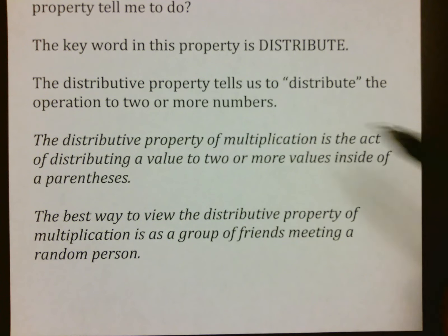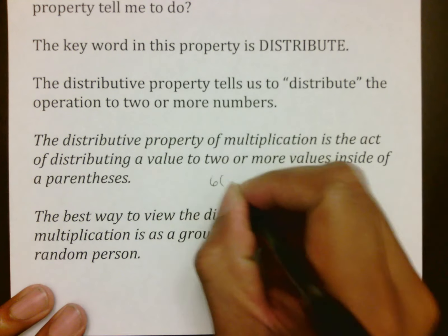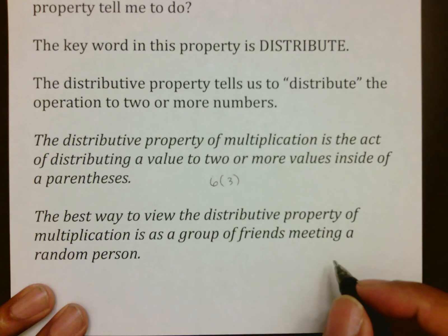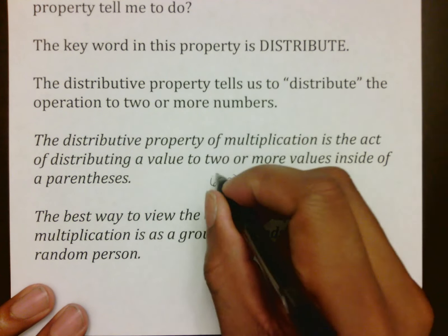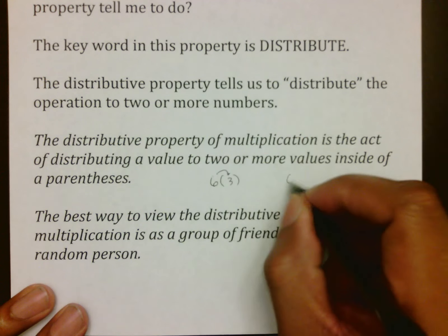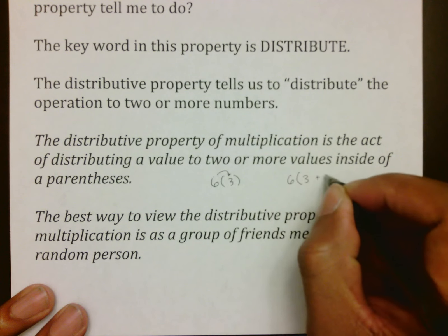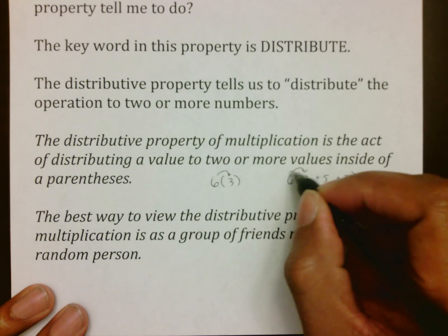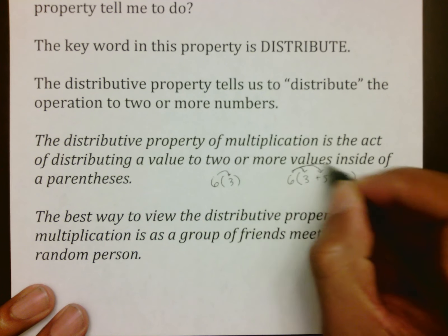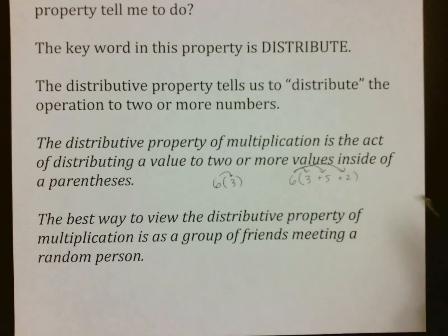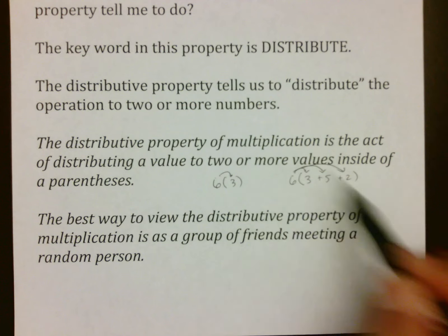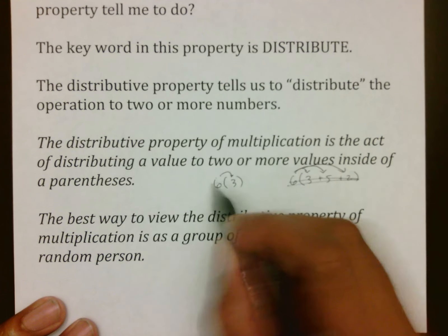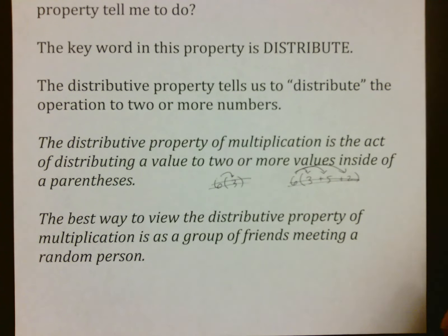The distributive property of multiplication uses parentheses because parentheses is our way of showing six times three. Instead of taking this six times three, we're going to distribute this six to two or more numbers. We're going to multiply the six to the three, the six to the five, and the six to the two. You're going to distribute it to more than one thing, and that's how the distributive property is shown.